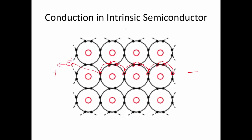So the bottom line in an intrinsic semiconductor is we have this flow of electrons moving one way with the electric field, and we also have this flow of holes going towards the negative side — two things contributing to conduction in intrinsic semiconductors. Another interesting thing: the warmer the semiconductor gets, the more thermal energy there is in the system, the more electrons will get enough energy to jump out of the valence shell and into the conduction band. So the warmer it is, the better conductor the semiconductor is.